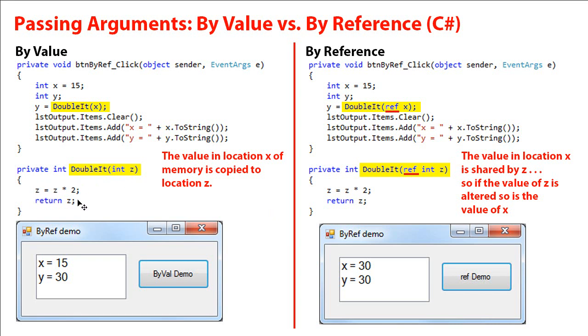When I double z, I then return z and y becomes 30. And I clear the list box and print out the values of x and y. And x is 15. Y is 30.